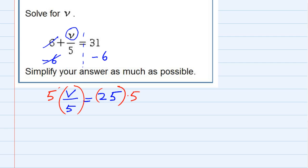Now, on the left-hand side, these 5s are going to cancel, giving me the v by itself, and that's what I wanted. And on the right-hand side, 25 times 5 is 125. So since we've gotten the v by itself, we have solved for v, v is 125.